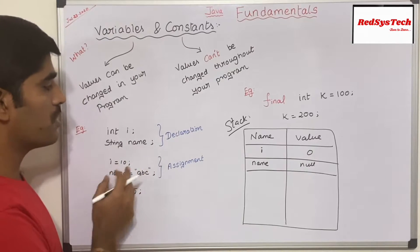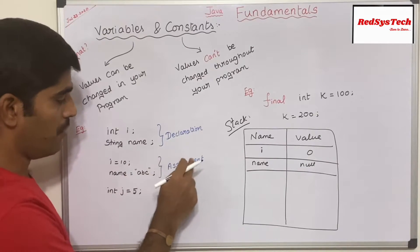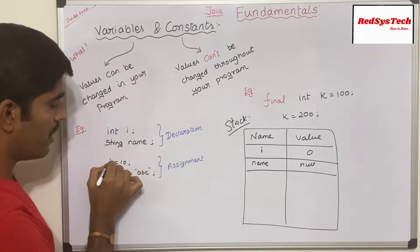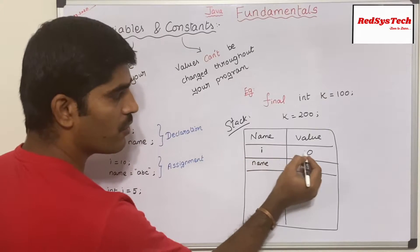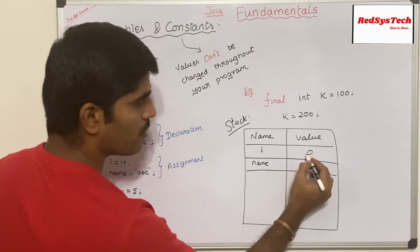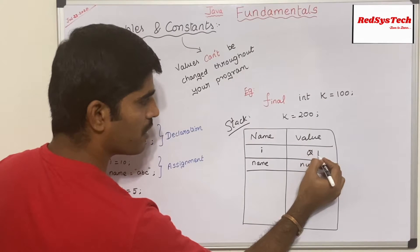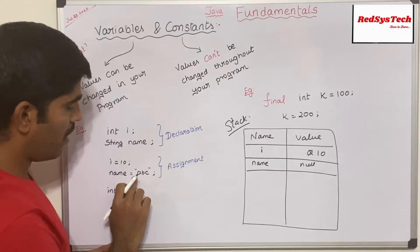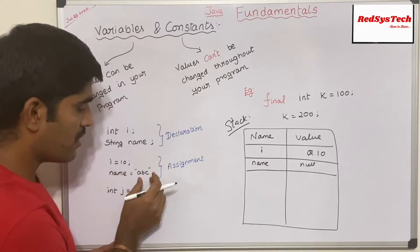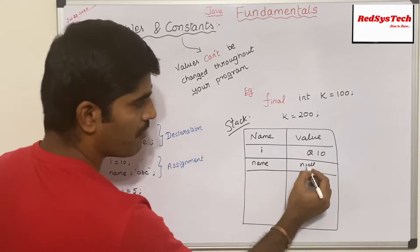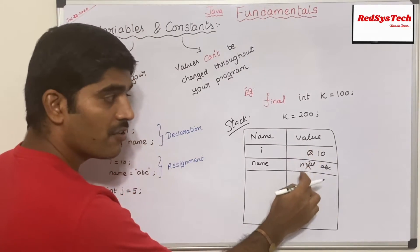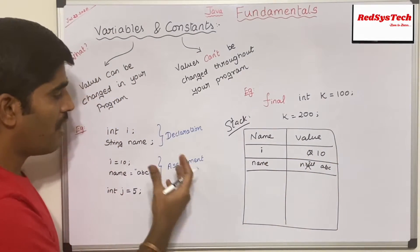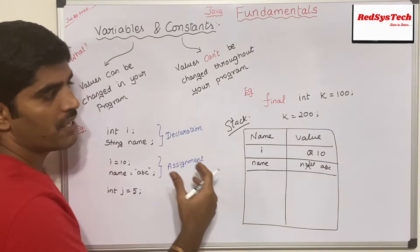If I want to assign a value to a variable, that is called assignment. Here I'm saying `i = 10`, which means I am assigning the value 10 to variable `i`. Initially `i` was 0, and now it changes to 10. Similarly, the `name` variable is assigned `"abc"`, so instead of null, I set it to `"abc"`. The value changed from 0 to 10 and from null to `"abc"`, which means I am able to change the value of a variable.